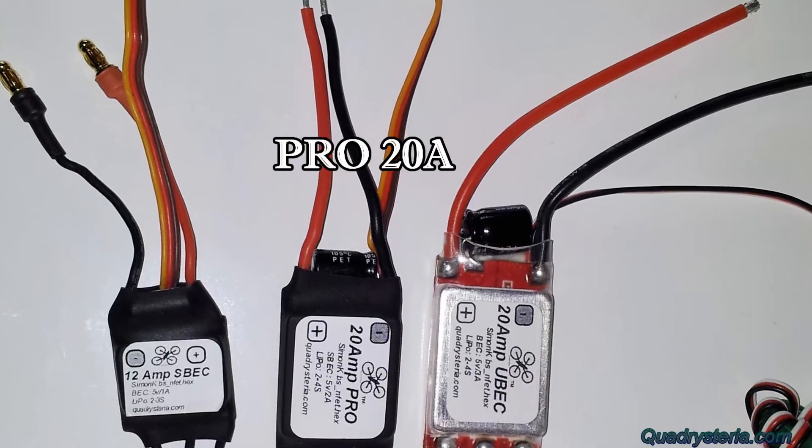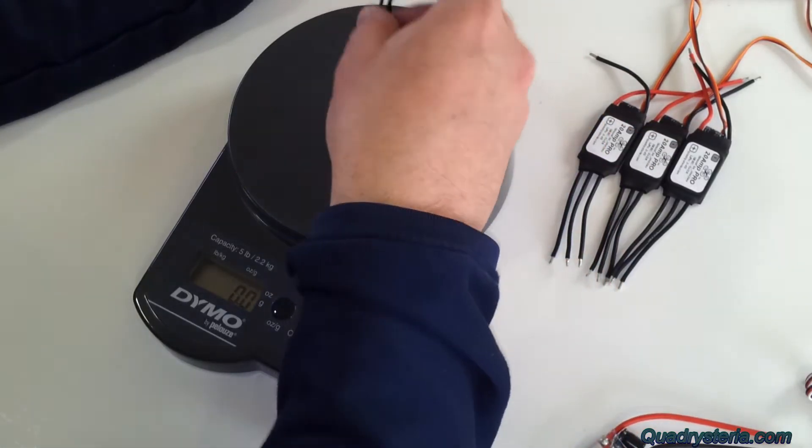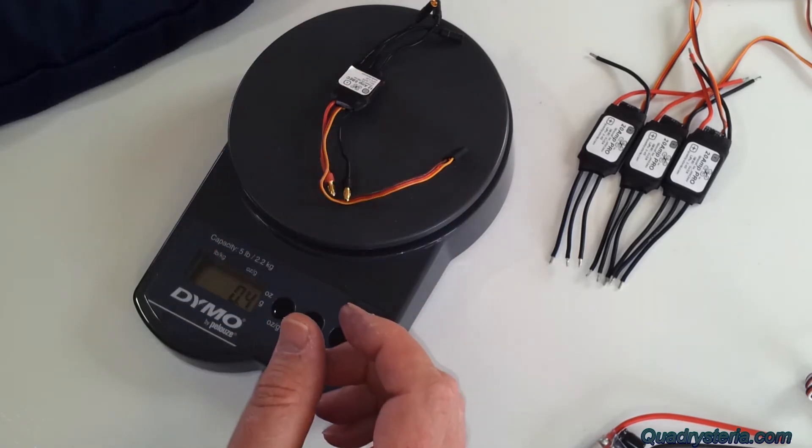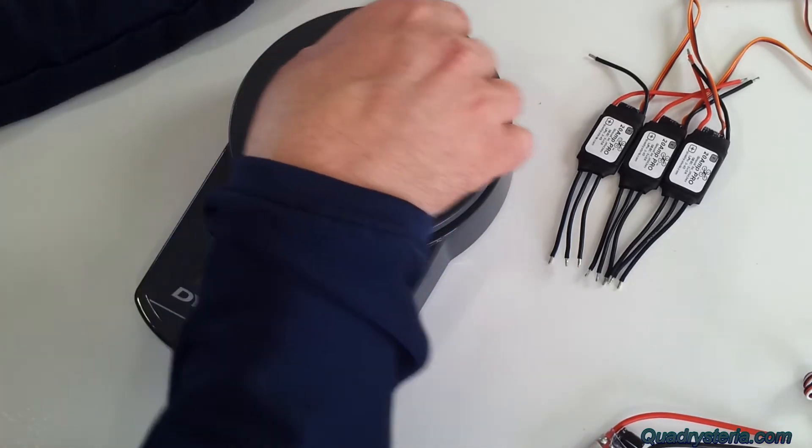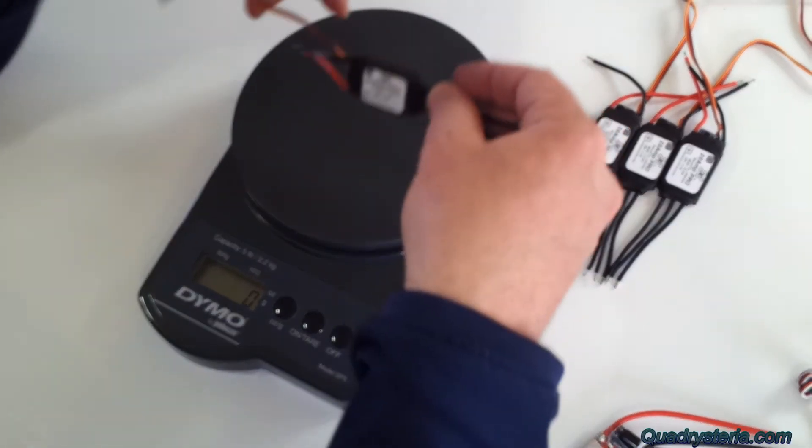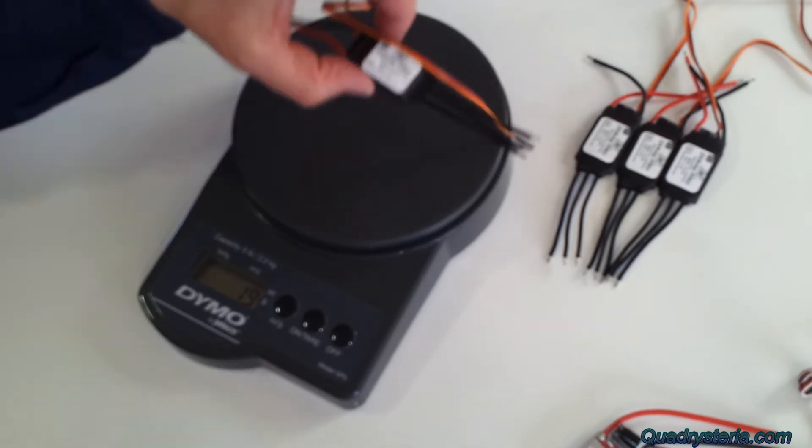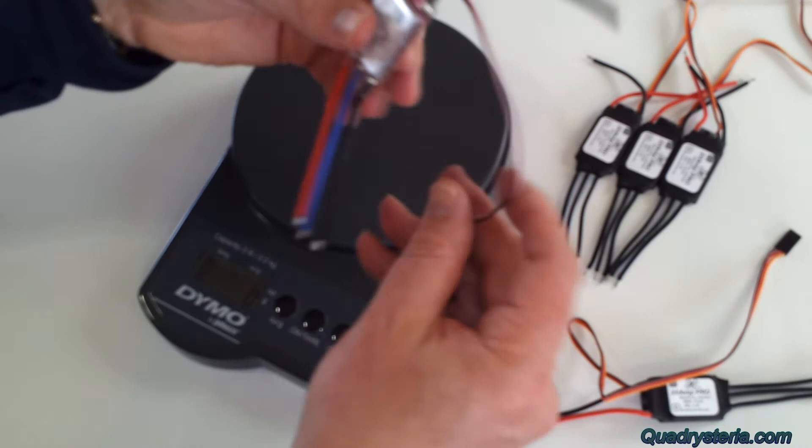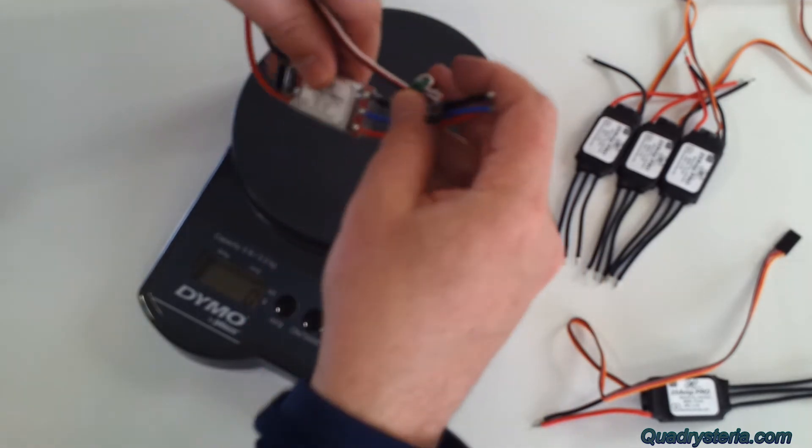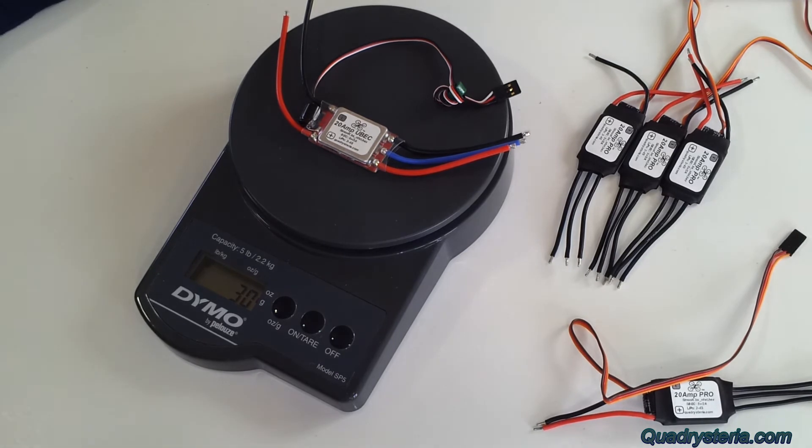And then let's take a look at the weight. The 12amp is 14 grams, and the new 20amp is 19 grams. So 5 grams more for this one, pretty light. Compare that to the standard 20amp I offer, the standard 20amp ESC is 30 grams.